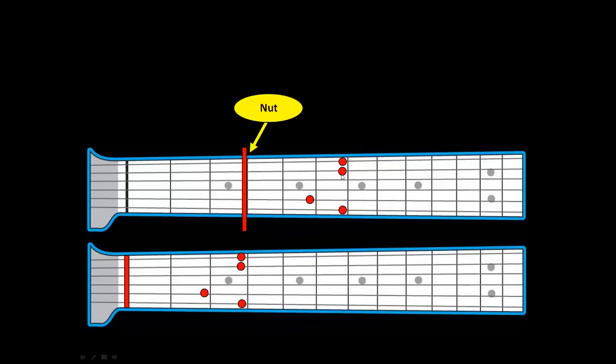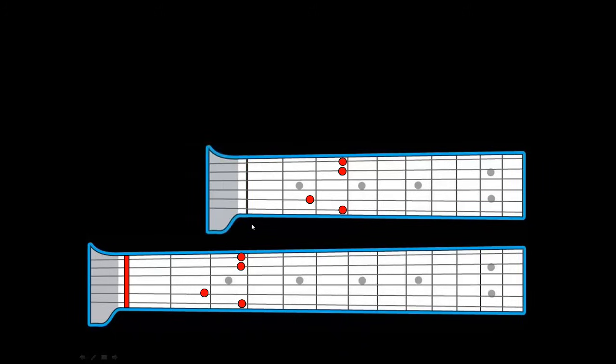One, two, three. So once again, essentially what a capo is doing is cutting the length of the neck and making it shorter.